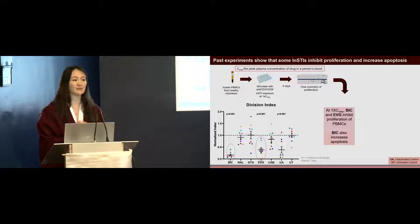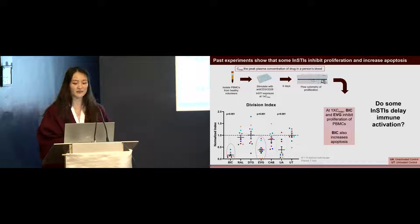We also found that BIC increases apoptosis. This led us to the question: why are some of the INSTIs inhibiting the proliferation? Do some INSTIs potentially delay immune activation?